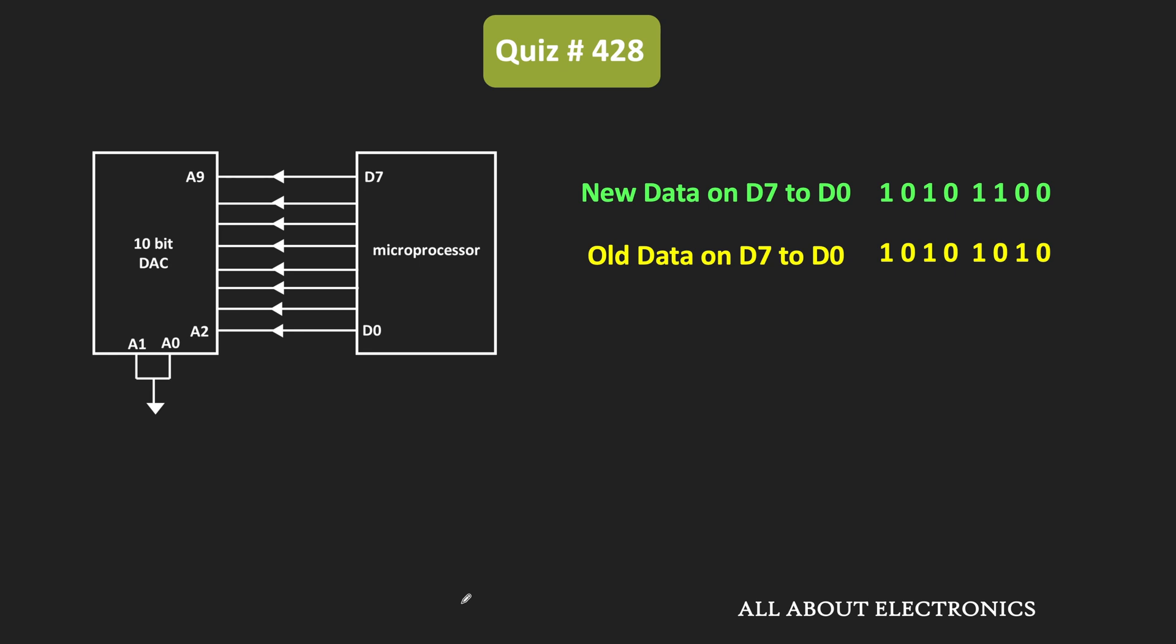But actually, the DAC consists of 10 input lines. This A1 and A0 are connected to the ground terminal. So the exact data input which is applied to the DAC will consist of 10 bits.